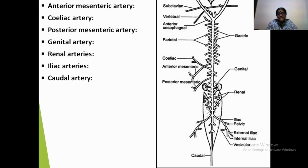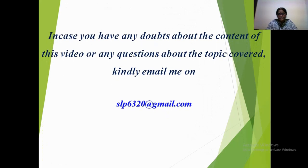Finally and posteriorly, the dorsal aorta terminates in the form of the caudal artery. Thus, we have discussed the arterial system in Calotes versicolor, its branching and sub-branching, and the distribution of blood to different parts of the body.